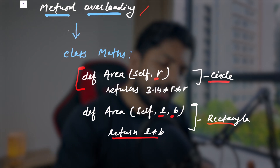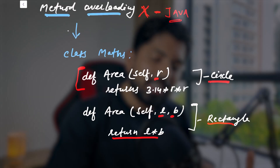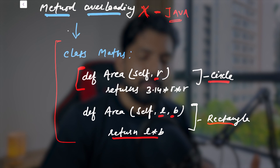Unfortunately, method overloading as described doesn't exist in Python — it's a concept from Java. It works perfectly in Java but will not work in Python, because Python offers a more efficient and smarter way to perform the same operation. If you run that code in Python, it will throw an error. Python's approach is default arguments or variable-length arguments.